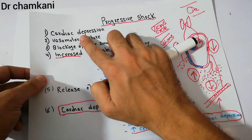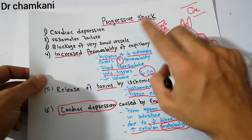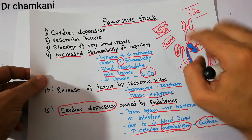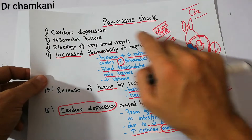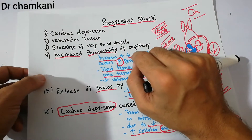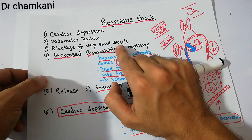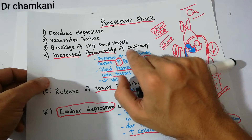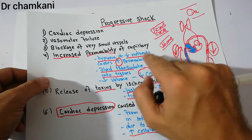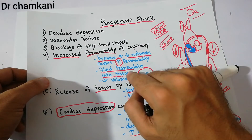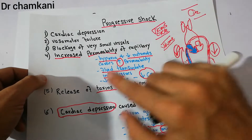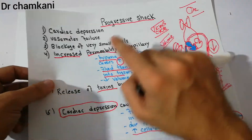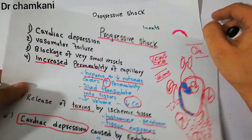These factors included cardiac depression — the decreased pumping of the heart due to inadequate blood flow or venous return — and vasomotor failure, which is the failure of the vasomotor center in the brain due to decreased blood flow. Then blockage of small vessels, increased capillary permeability due to hypoxia with fluid transudation into tissue, and finally release of toxins by ischemic tissue and endotoxins by gut bacteria. These factors helped in the progression of shock.